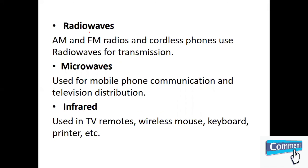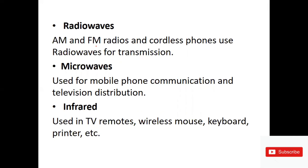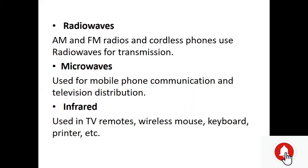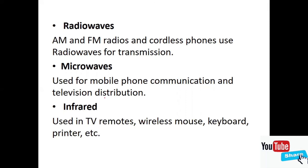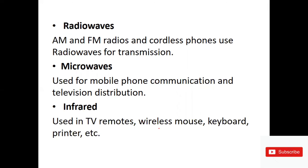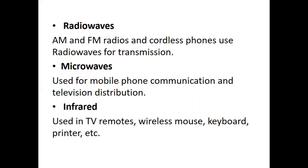Coming to the unguided media: the first example is radio waves — AM and FM radio and cordless phones use radio waves for transmission. Microwave transmission is used for mobile phone communication and television distribution. Infrared is mainly used in TV remotes, wireless mouse, keyboard, and printer. These are the examples of unguided media. With this, we will wind up. Thank you.